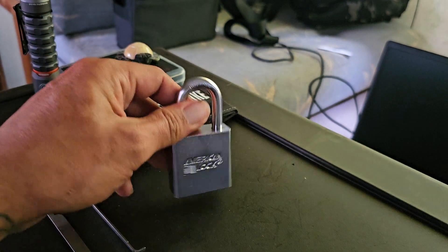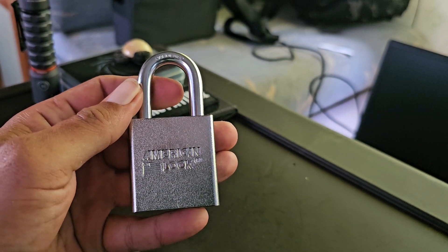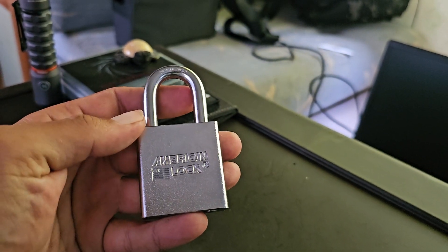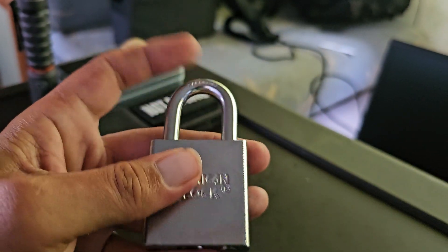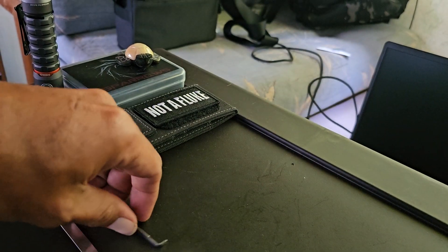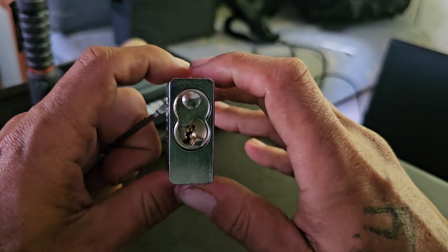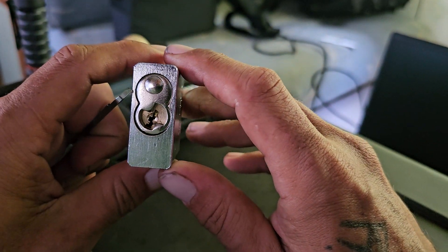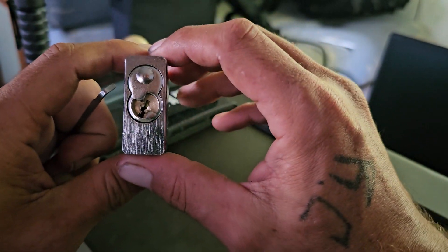This is the American Lock 5200. It is the solid steel 5 pin core hardened shackle. It has the same American core. It has spools and serrated pins.